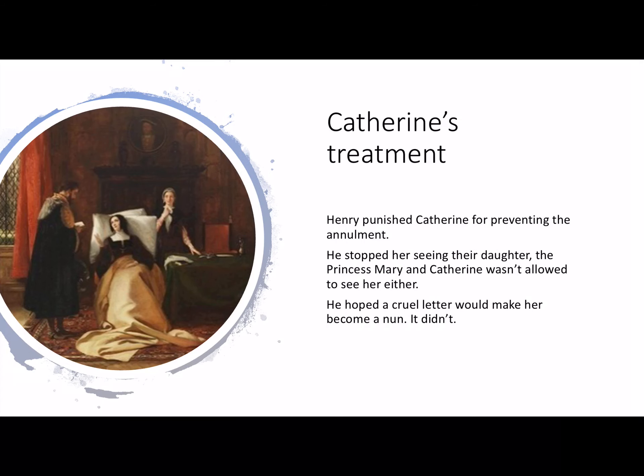Henry punished Catherine for preventing the annulment. He would no longer see their daughter, Princess Mary, and neither was Catherine allowed to see her daughter. He wrote this in a cruel letter, which he hoped would force her into becoming a nun. She didn't.